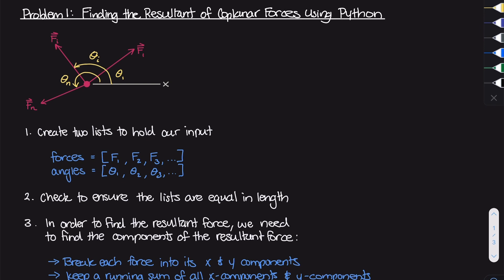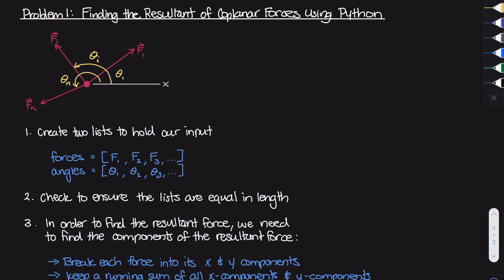So to start off, this is our very first problem, and it's going to be a pretty fun one. I'm going to assume that you already know how to find resultant vectors of many different forces by hand — just doing hand calculations where we take the summation of different components of those forces, add them together, and use the like components to find the resultant force. In this problem, we are going to be finding the resultant of some coplanar forces using Python.